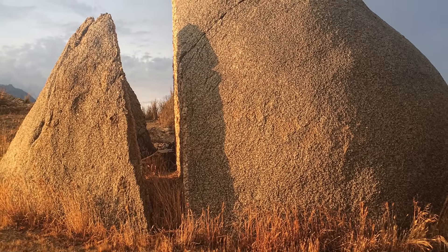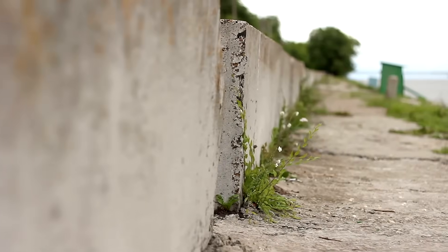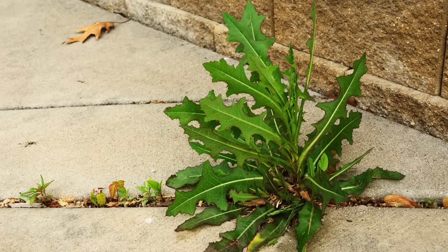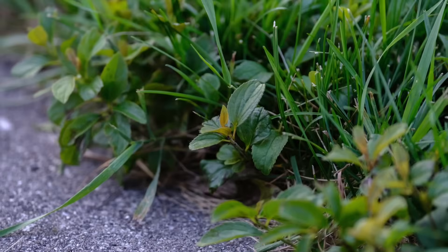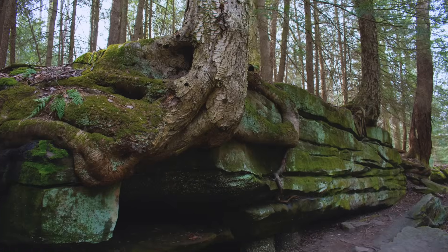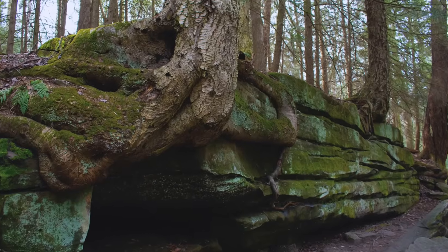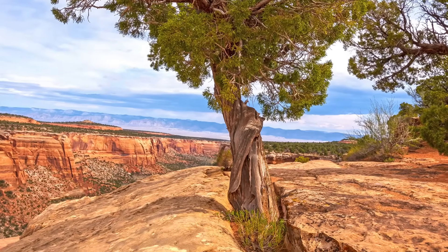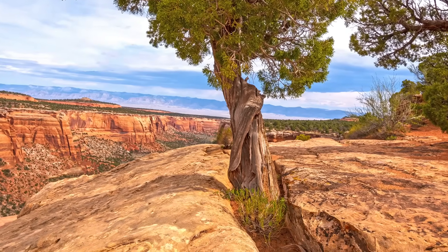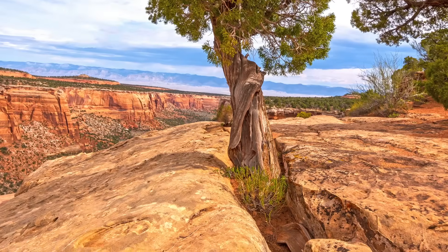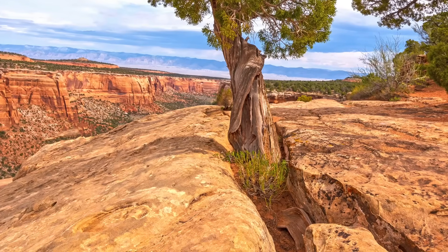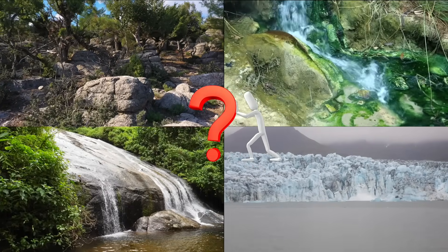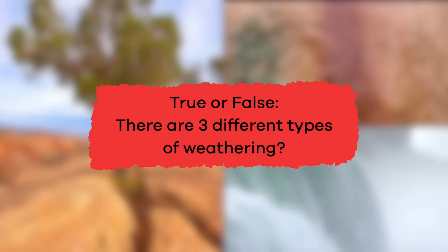When a rabbit burrows, it often digs right into the crack of a rock. This makes the crack bigger, which sometimes even splits the rock in half. Have you ever been out walking and seen weeds growing through a crack in the sidewalk? If that crack isn't repaired, those weeds will eventually destroy the sidewalk as they continue to grow. Here is a cool example of biological weathering in nature — this tree has created a large split in this rock. Pretty cool, right?